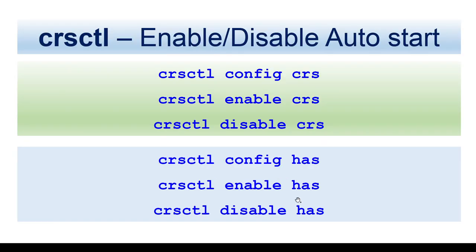The enable and disable auto-start — basically this parameter config controls whether, when you restart the Oracle database server, the cluster services will come automatically online or not. This is controlled by enable/disable auto-start. So CRSCTL config CRS will tell you whether auto-start is enabled. If you disable it, when the server is next rebooted, the cluster resources will not come online and you will have to manually start the cluster resources.